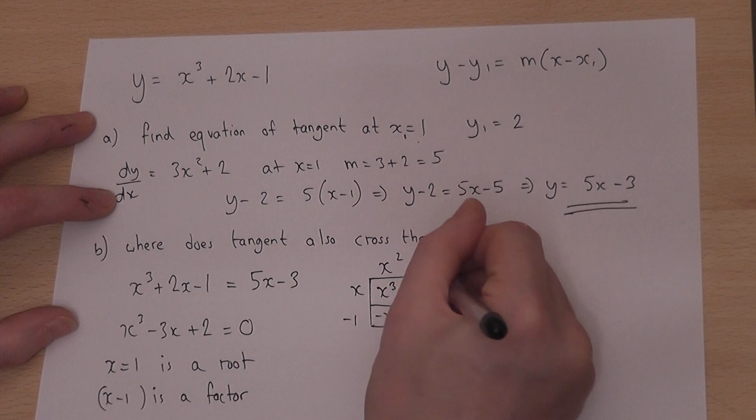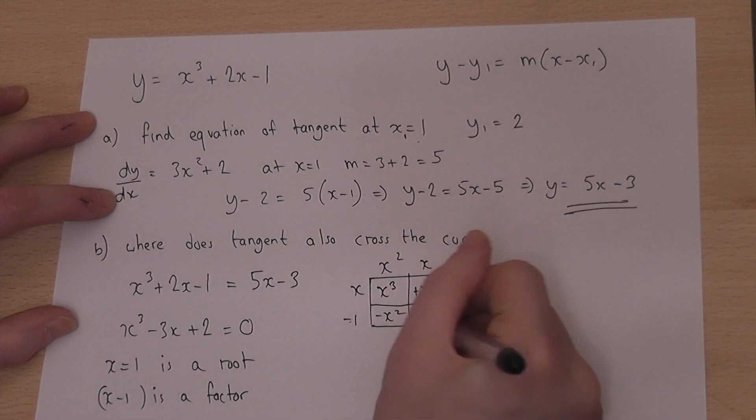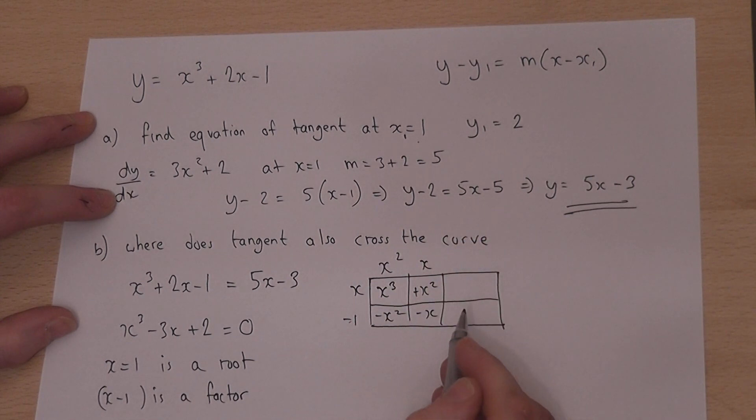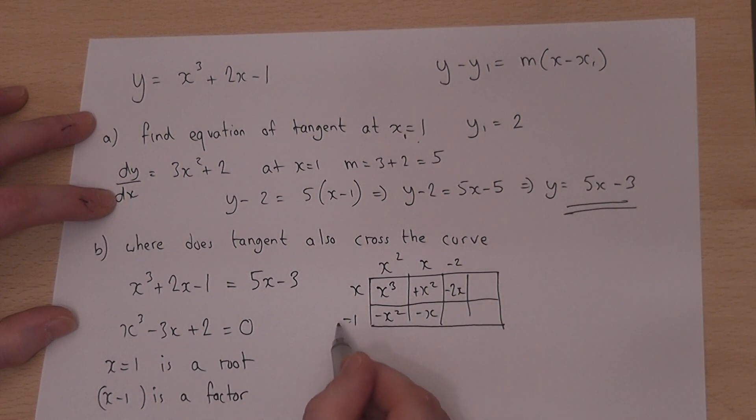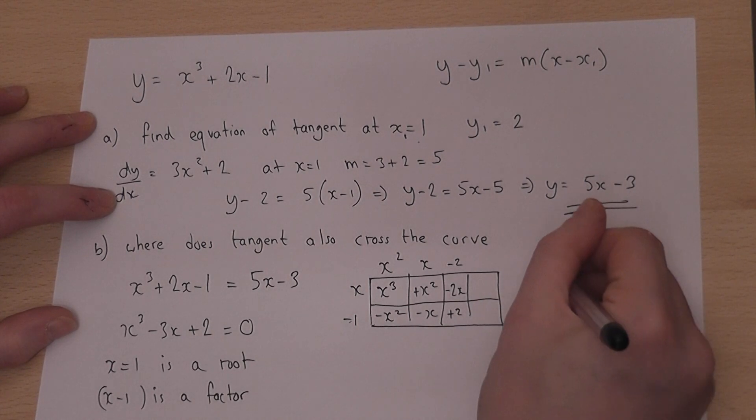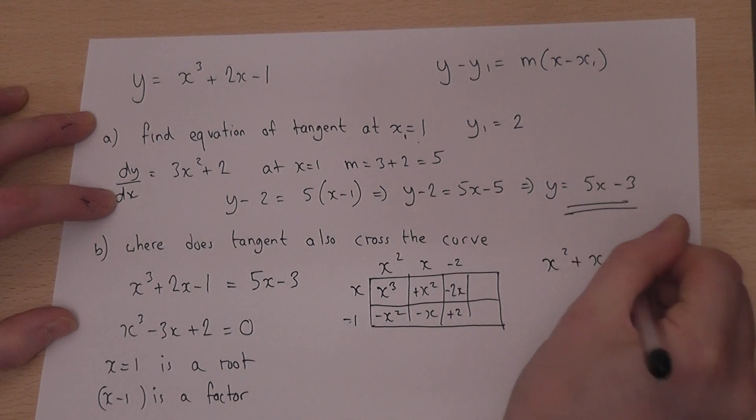There's an x there, so I need another x. Minus 1 times x is minus x. I want there to be minus 3x, so I need minus 2x. x times minus 2 is minus 2x. And then minus 1 times minus 2 is plus 2, as required. So I'm left with x squared plus x minus 2.